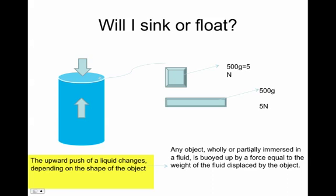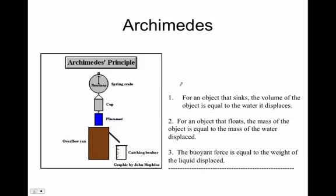The upward push of a liquid changes depending on the shape of the object. If we can trap more air in the object that will help us, and the more water that's displaced, the more upward push of the buoyant force. For example, this block which is 500 grams, equal to 5 newtons — the one displacing less water would probably sink. For an object that sinks, the volume of the object equals the water it displaces. The weight of that displaced water in newtons equals the buoyant force of the water.